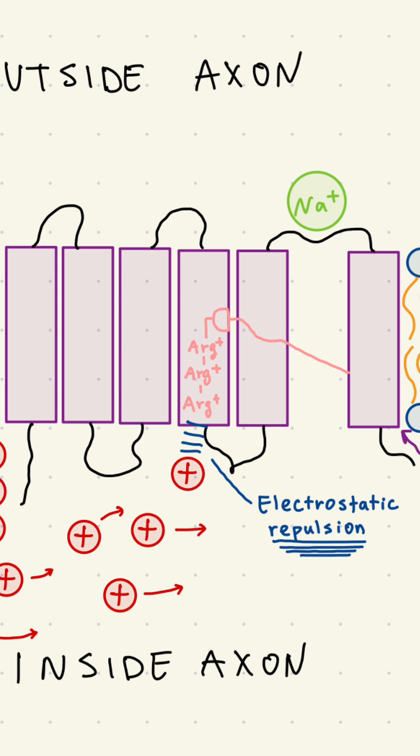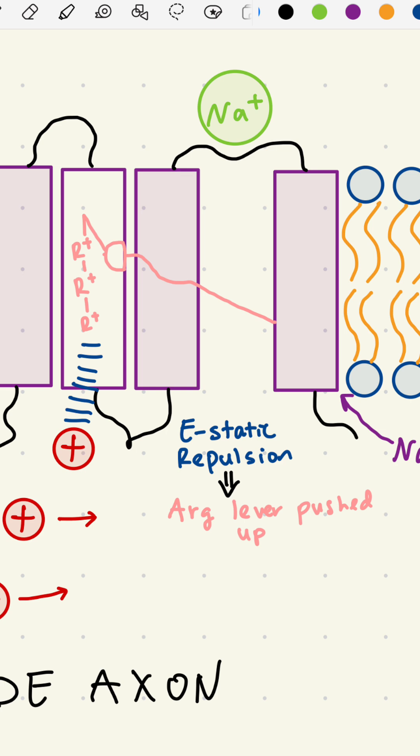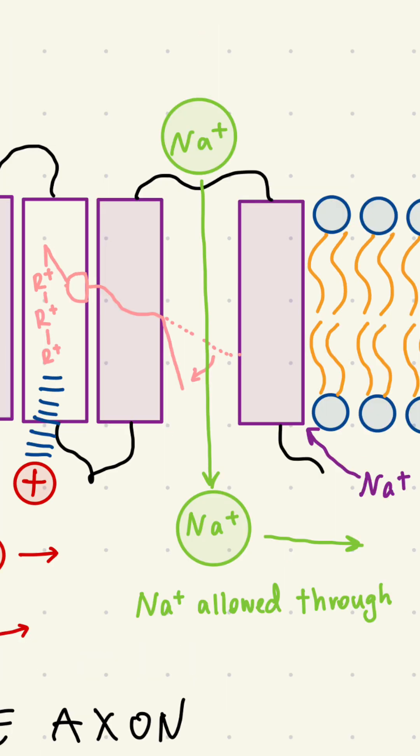Positive charges repel each other, so when we get an accumulation of sodium ions on the inside of the membrane, they repel the arginines, pushing this lever up and forcing the channel open, propagating the depolarization.